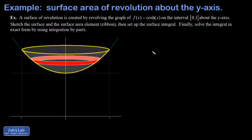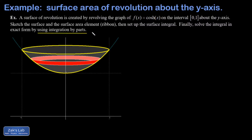In this video, we're looking at a surface of revolution formed by revolving the graph of cosh(x) on 0 to 1 about the y-axis. Once we set up the surface integral for this surface of revolution, it turns out that the resulting integral requires integration by parts.